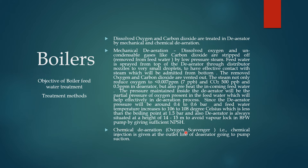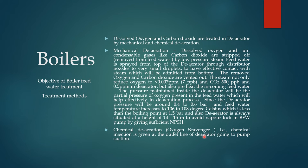For chemical deaeration, an oxygen scavenger chemical is injected at the outlet line of the deaerator, which goes to the pump section after mechanical deaeration. The deaerator outlet line coming through headers goes to the pump section, and immediately after the deaerator, the oxygen scavenger is injected at the outlet end of the deaerator.